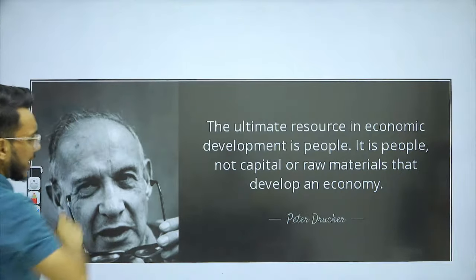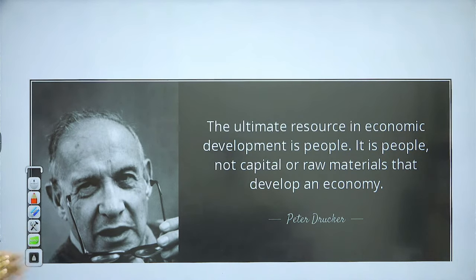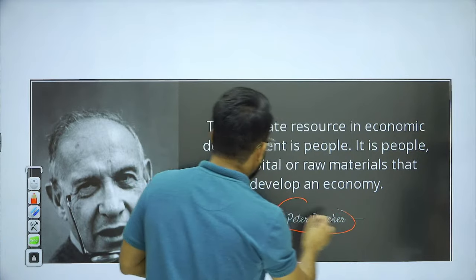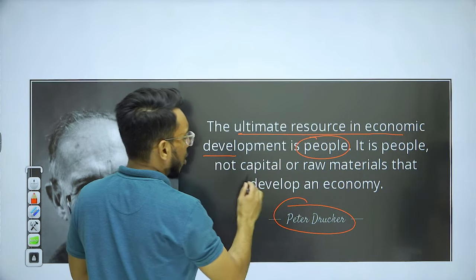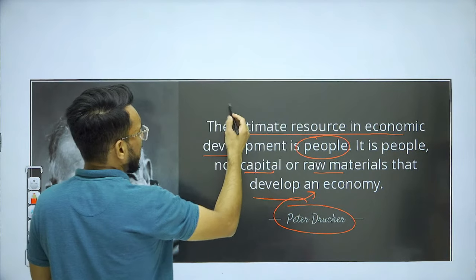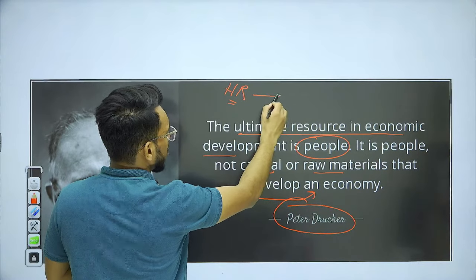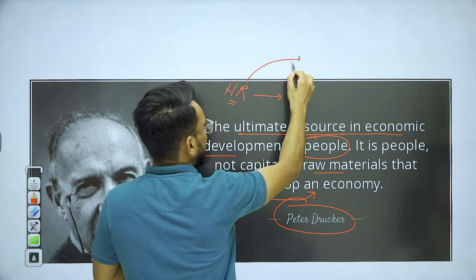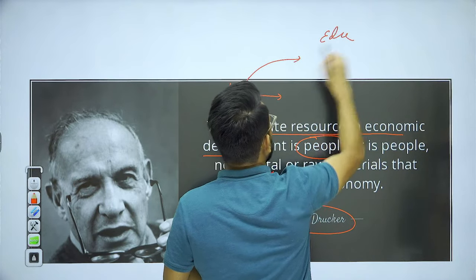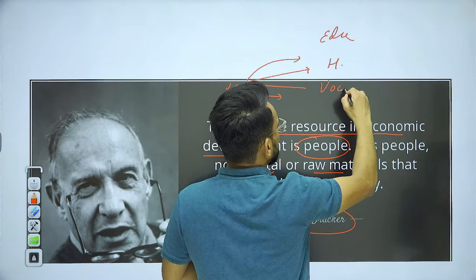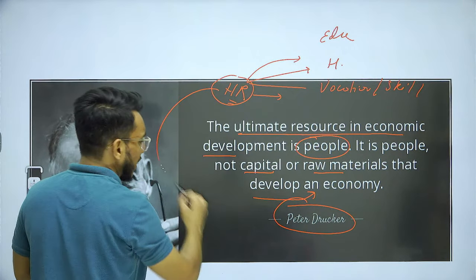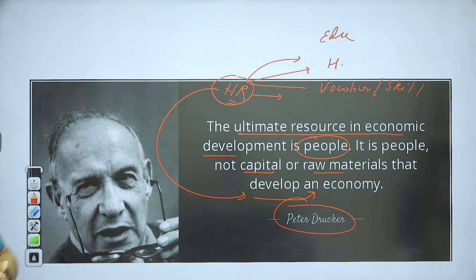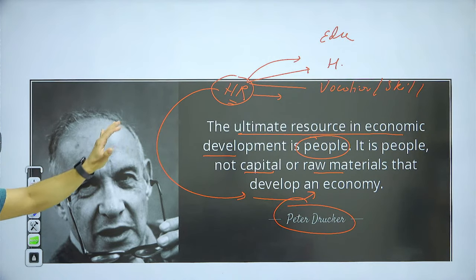These are the synoptic notes you can download. Every day we take a GS quotation which can complement GS answers and essays. Today's quotation is from Peter Drucker, who says: 'The ultimate resource in economic development is people — it is people, not capital or raw material, that develops an economy.' The most important asset of a nation is human resource, and human resource development — covering education, health, and vocational skills — is most crucial. You can use this in GS Paper 2 and GS Paper 3.